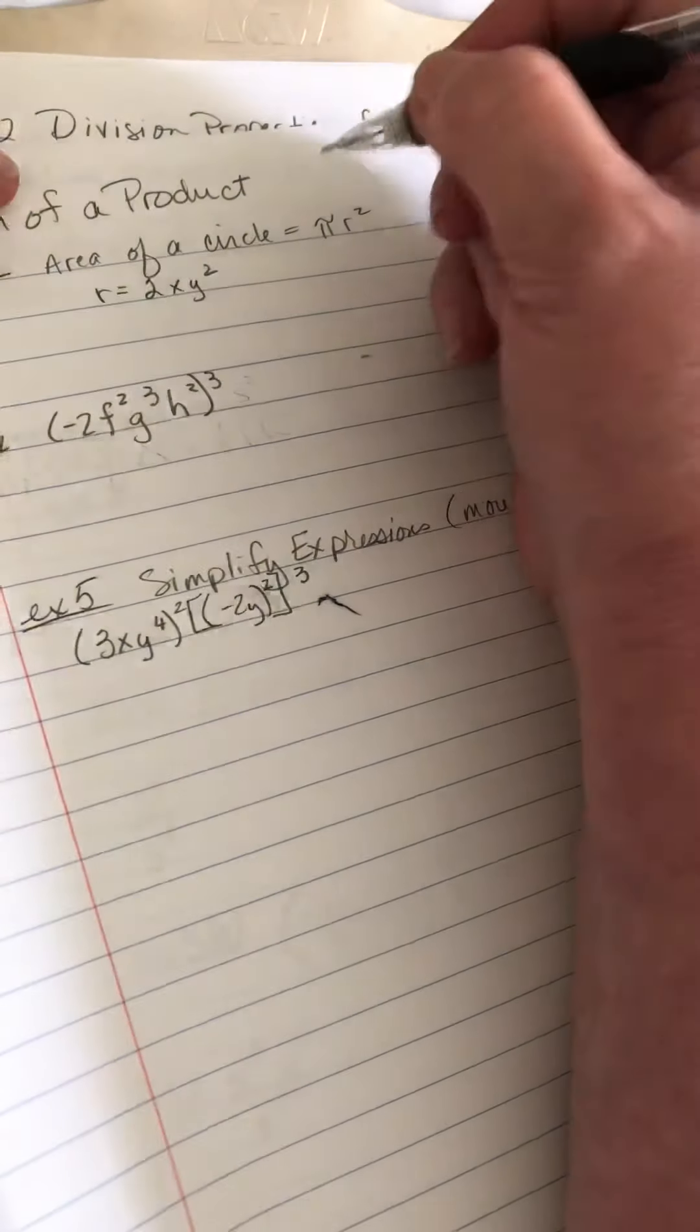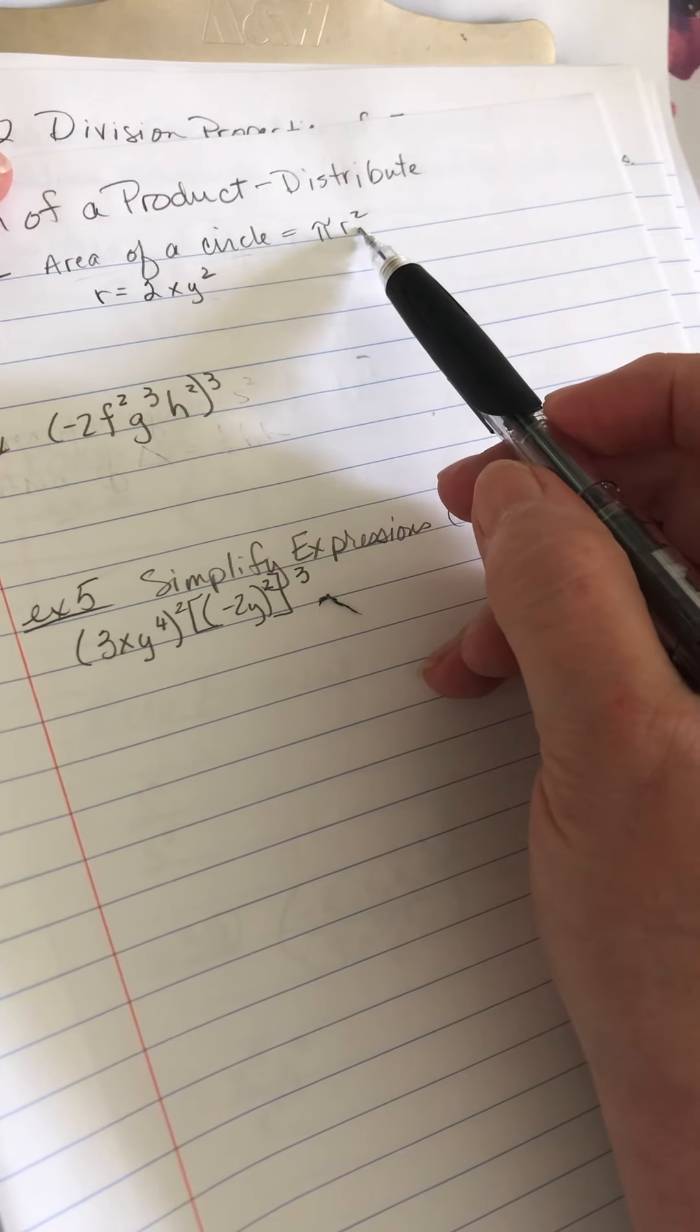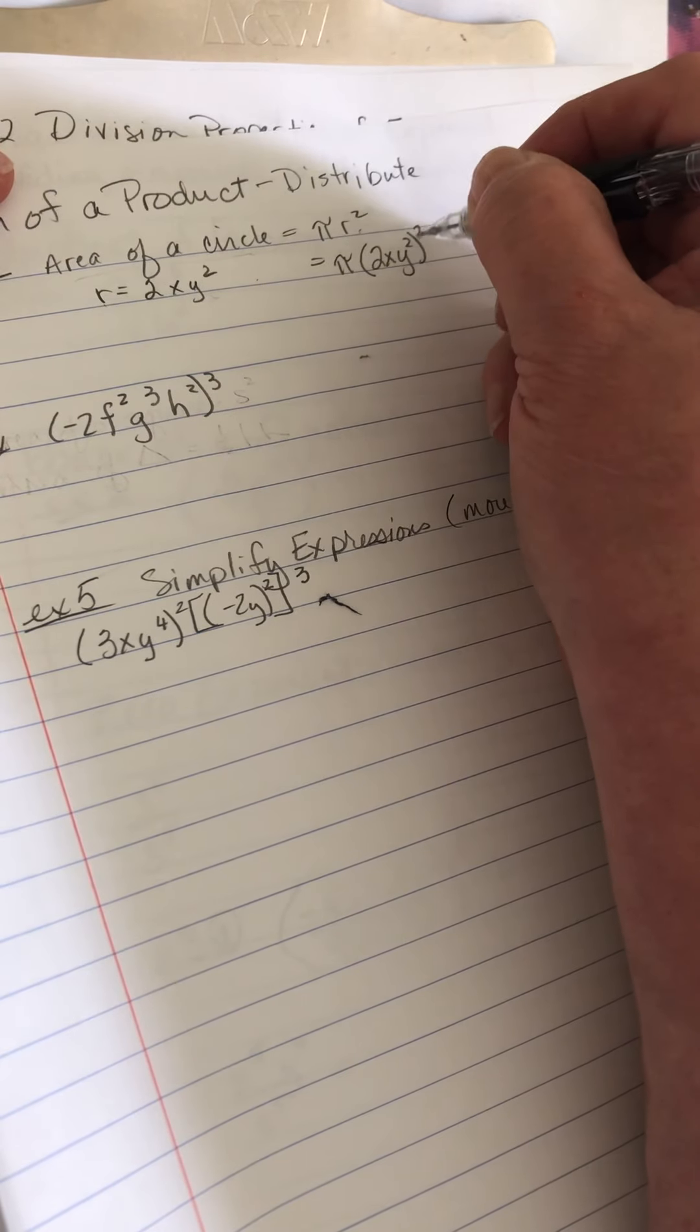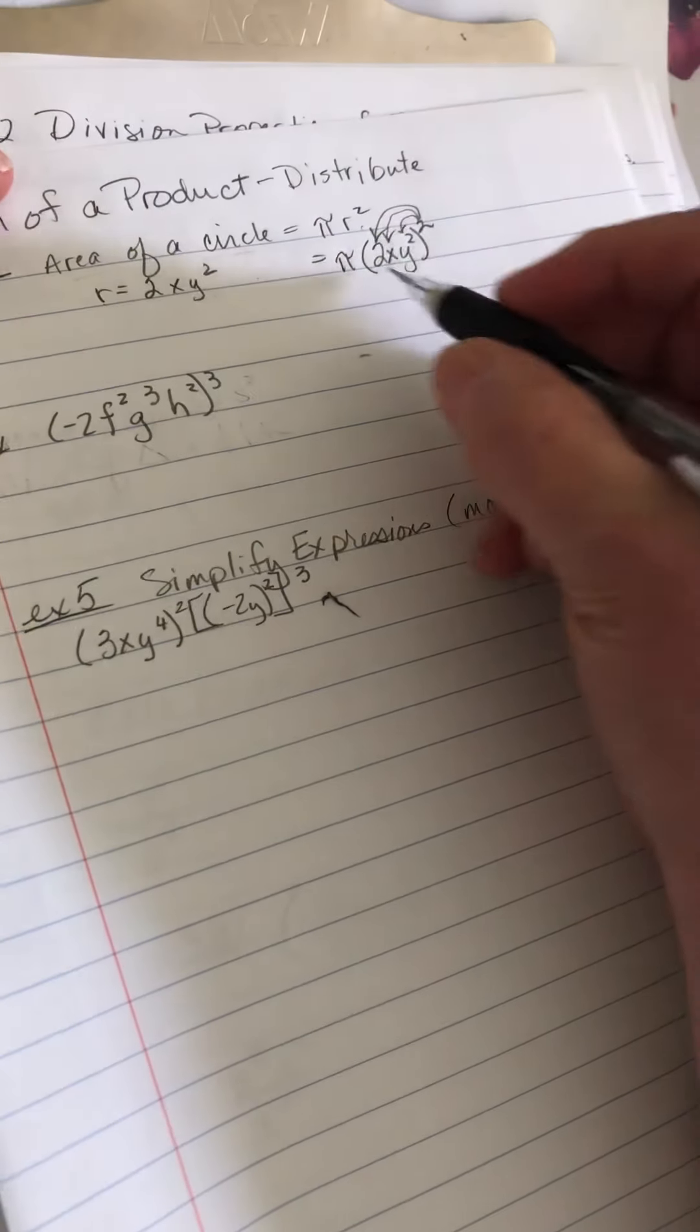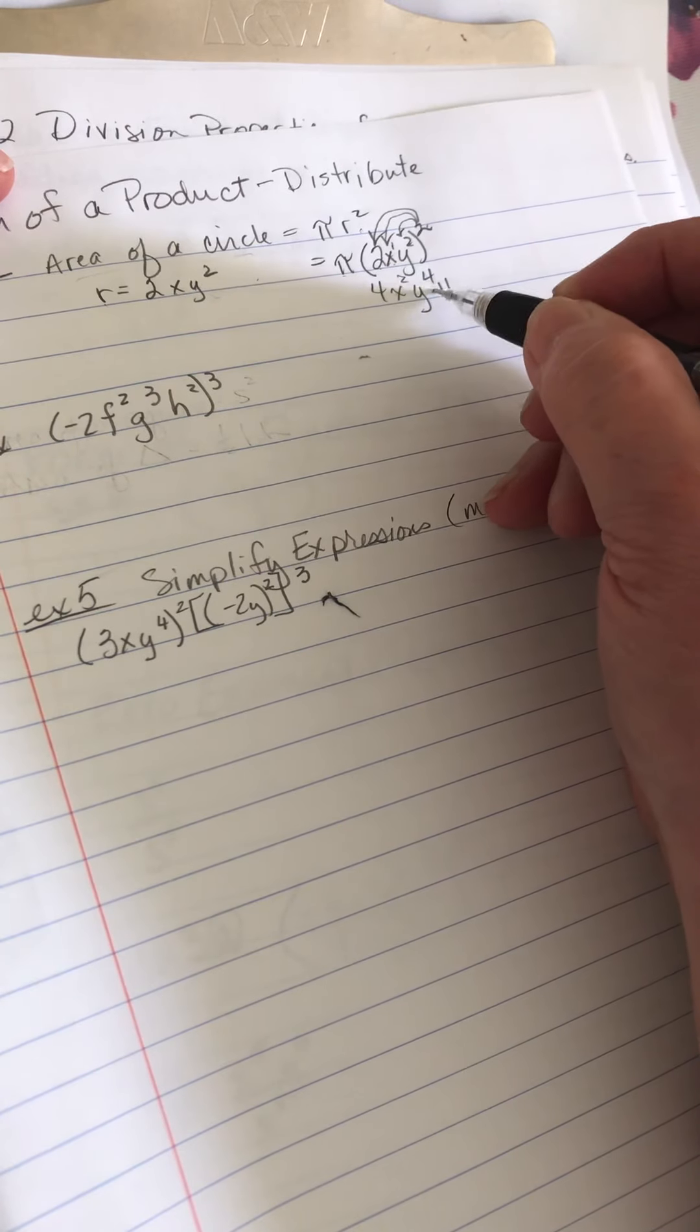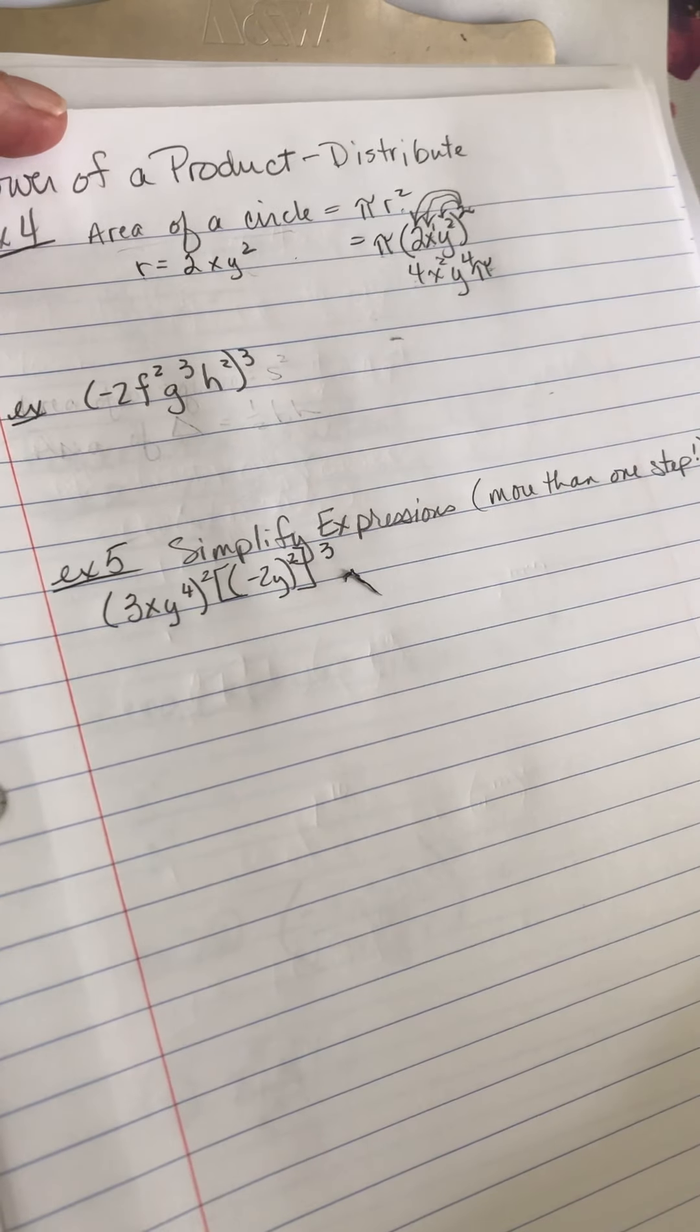Power of a product. This is just using that idea of the distributed property because we're going to distribute the power. So area of a circle is pi r squared, and if r is 2xy squared, that means I really have pi times the quantity 2xy squared all raised to the 2nd power. This is going to go to that square, it's going to go to the x, it's going to go to the 2. And I've got to do that part first. 2 squared is 4, x that's like a 1, 1 times 2 is 2, 2 times 2 is 4. And usually they'll put the pi on the end because it's like a label.